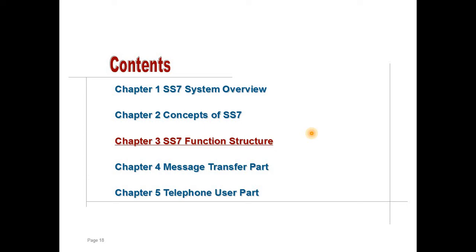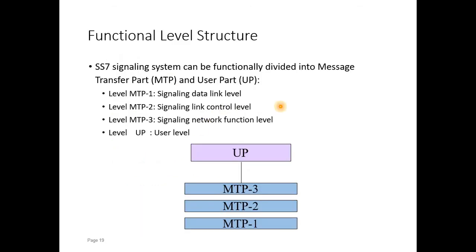Hello friends, today is our second lecture related to SS7 signaling, and today we will start with the SS7 functional structure. The SS7 functional structure is basically comprised of two parts: the message transfer part and the user part.